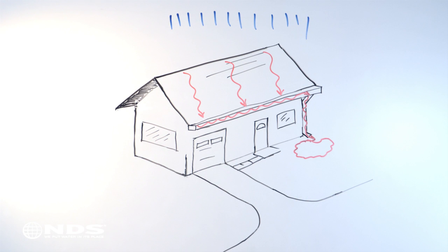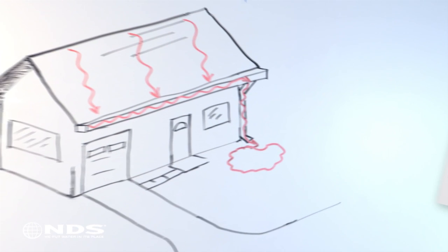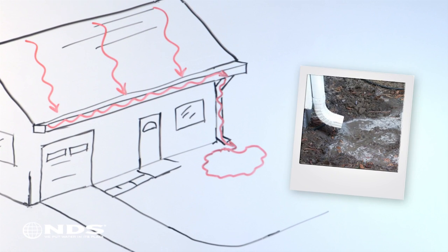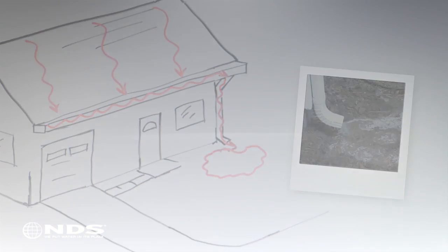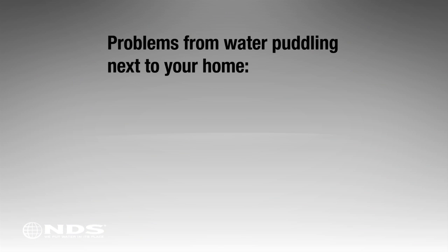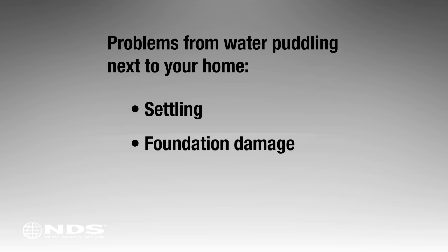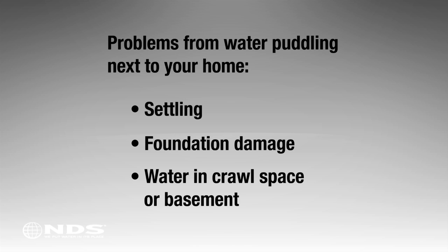Many times this is where the drainage system ends. Water from the downspout drains to the ground next to your home. This can lead to settling, foundation damage, or water in your crawlspace or basement.